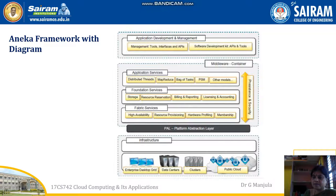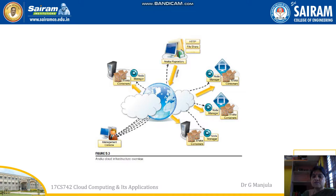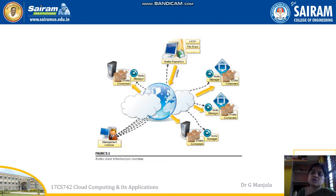The Platform Abstraction Layer is also called the middleware container. This is the Aneka cloud infrastructure overview. To understand how Aneka looks from the top: you must know what is meant by PAL — Platform Abstraction Layer — and the upper layer called the interface, which is Software as a Service, Web 2.0, or APIs (Application Program Interface). The lower level talks about IaaS.